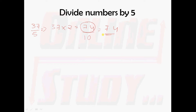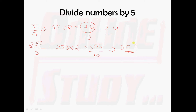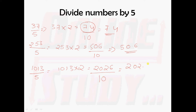We shall take one more example: 253 divided by 5. And then 1013 divided by 5. For 1013, multiply with 2 to get 2026. And the final step is to divide by 10, so you will get 202.6. That is, 1013 divided by 5 is 202.6.